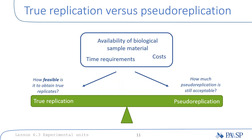We have to acknowledge that there are situations where scientists are forced to make compromises regarding the optimal study design due to costs, time considerations, and the availability of biological sample material, and it might not always be feasible to obtain sufficient numbers of true replicates. We often need to decide how feasible it is to obtain true biological replicates and how much pseudo-replication is still acceptable. In any case, as a minimum requirement, we need to be transparent about what we have defined as the experimental unit, as this defines the sample size for experiments, and we need to provide sufficient detail when preparing results for presentations or publications.